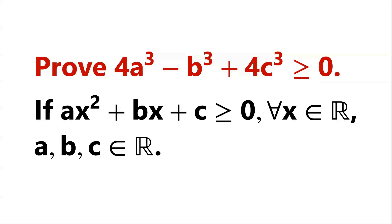Prove this inequality: 4a cubed minus b cubed plus 4c cubed is greater than or equal to zero. Given that, for all x being real numbers, ax squared plus bx plus c is greater than or equal to zero, where a, b, and c are real numbers.